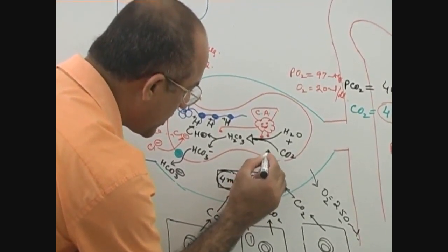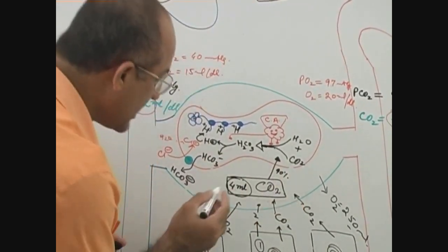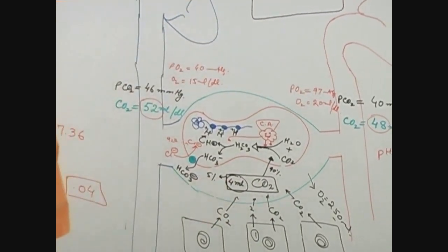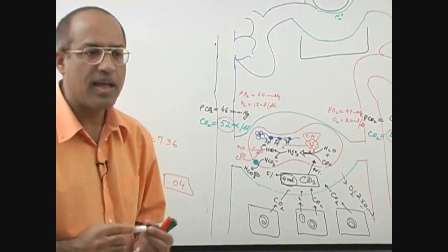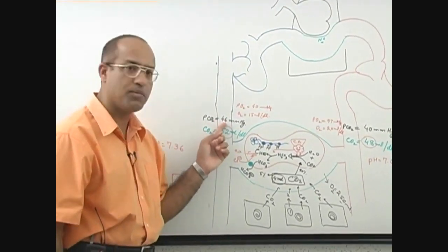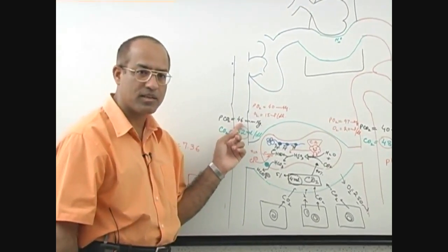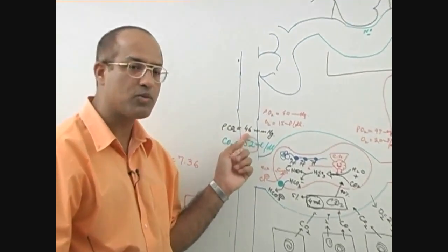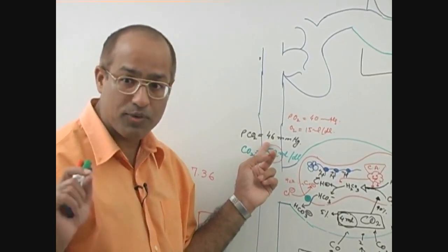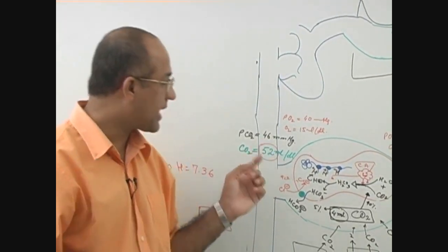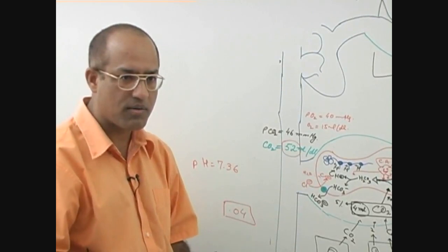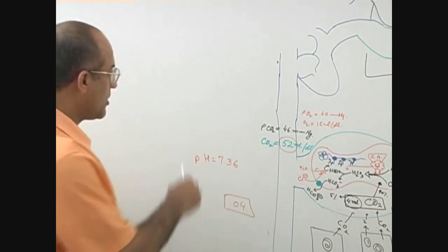90% has gone. But 5% of it is in dissolved form. 5% of carbon dioxide can be kept into dissolved form under the pressure of 46 millimeters of mercury partial pressure of carbon dioxide. So it means whatever carbon dioxide is being produced, only 5% of that can be kept into solution form by partial pressure of 46 millimeters of mercury.